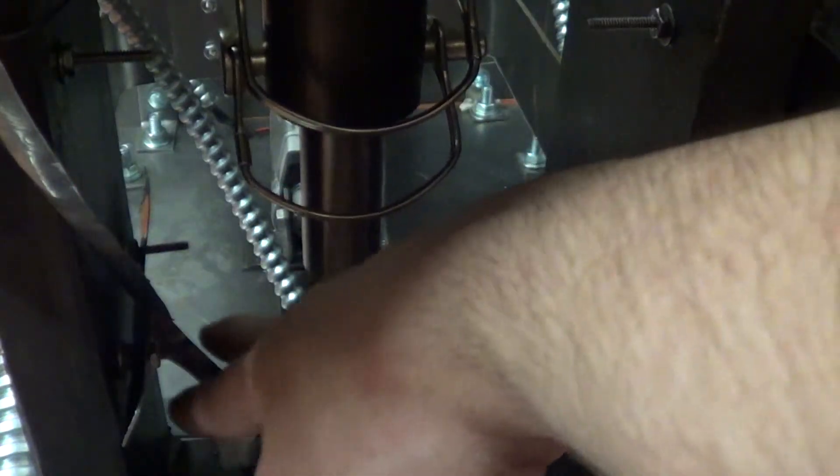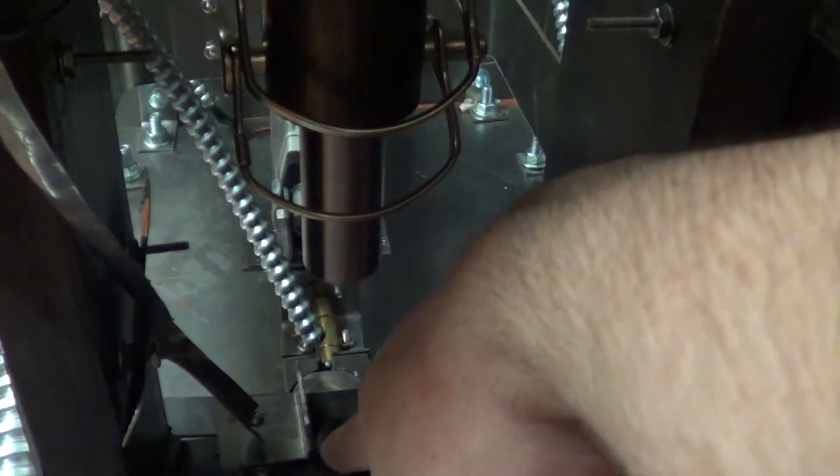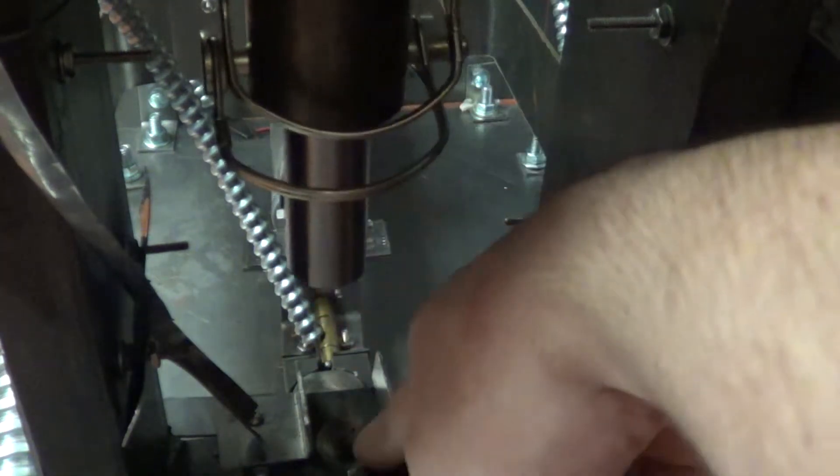And whenever material gets grinded, it comes down this chute. And this has been bent out of the way, but it would normally go down in there. And then this would come down and press it.